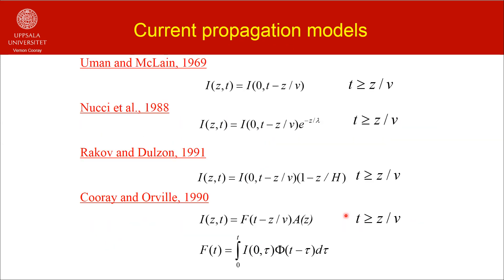There are several current propagation models in the literature. All the models described so far — the models of Norinder, Bruce and Gold, and Dennis and Pierce — are all current propagation models. A few more, starting from the transmission line model, include the modified transmission line models introduced by Nucci et al. and Rakov and Dulson. In the model of Nucci et al., the current attenuates exponentially. In the model of Rakov and Dulson, it attenuates linearly.